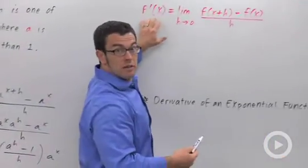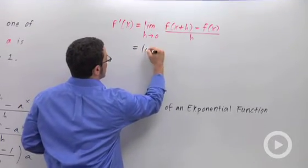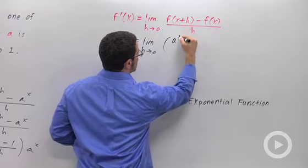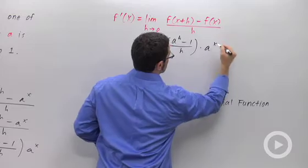Because recall that the derivative of f is the limit as h approaches 0 of the difference quotient. So this will be the limit as h approaches 0 of a to the h minus 1 over h times a to the x.